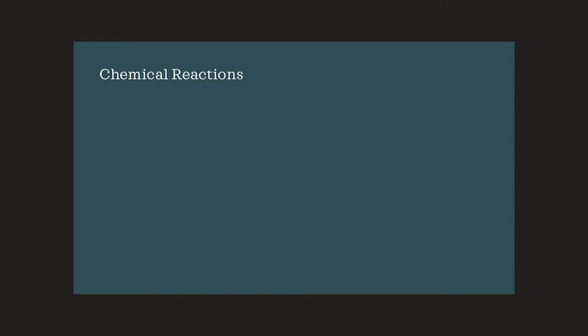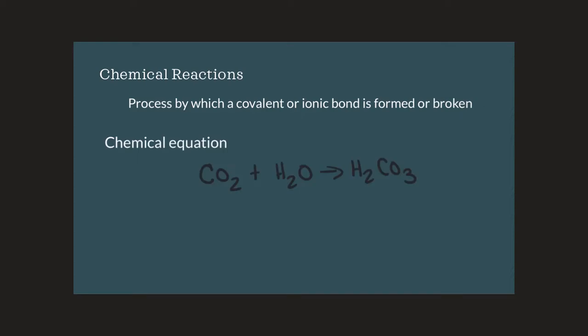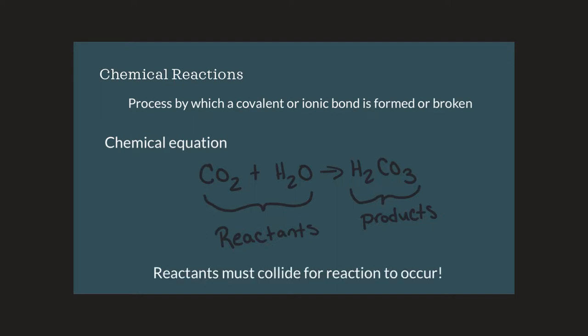Let's talk about chemical reactions. A chemical reaction is a process in which a covalent or ionic bond is formed or broken. A chemical equation used to show a chemical reaction typically shows the reactants on the left and the products on the right. The reactants must collide in order for the reaction to occur. The term metabolism describes all the reactions in the body, and virtually all metabolic reactions depend on the solvency of water.